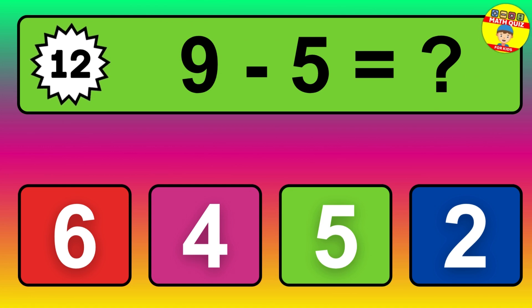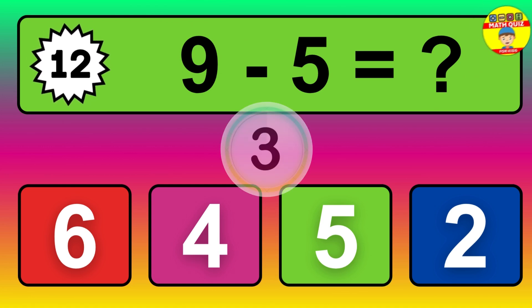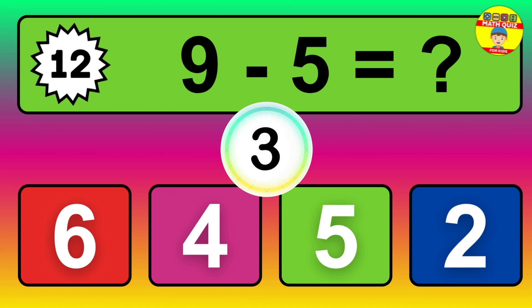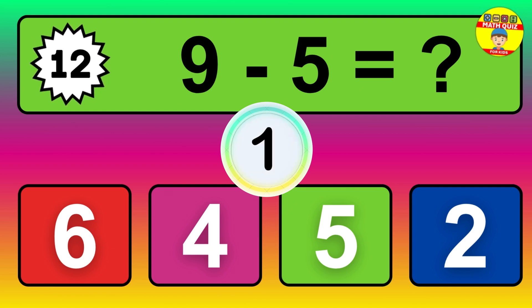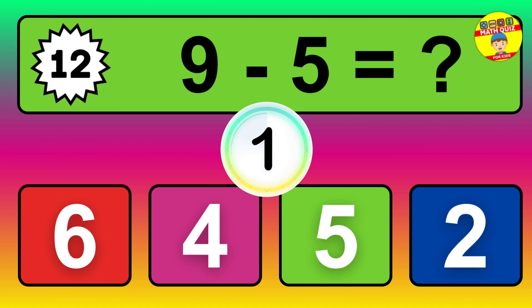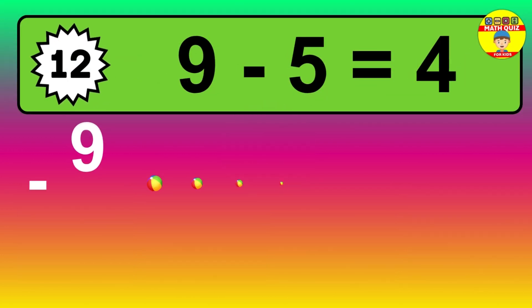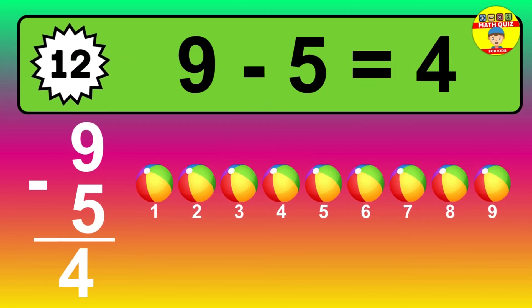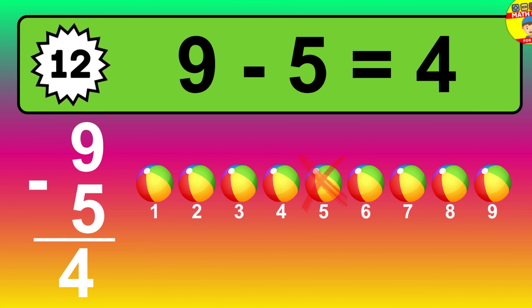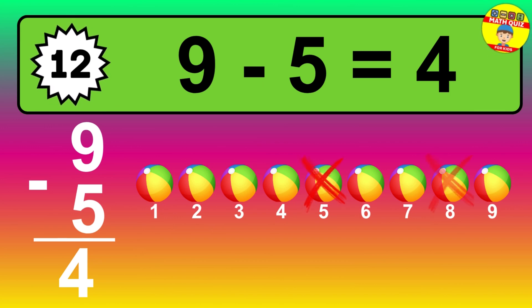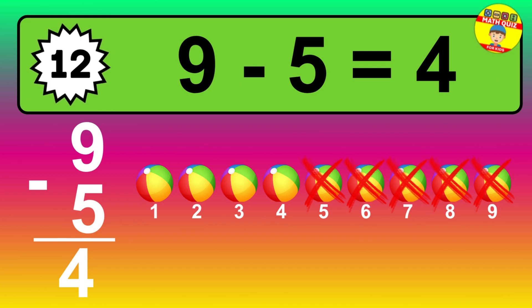Question twelve: nine minus five equals what? So the answer is nine minus five is four. Let's count it. One, two, three, four.